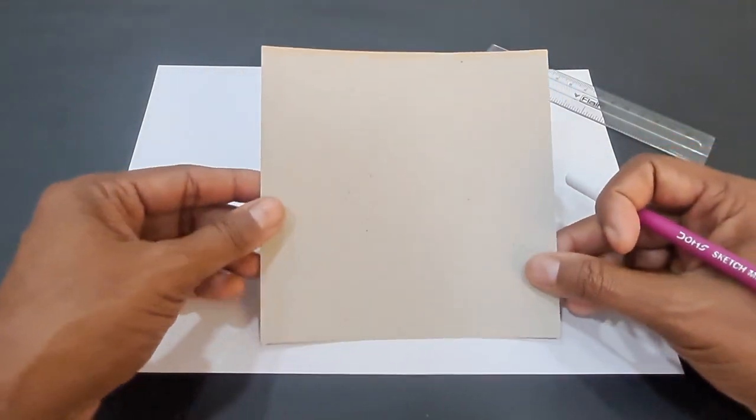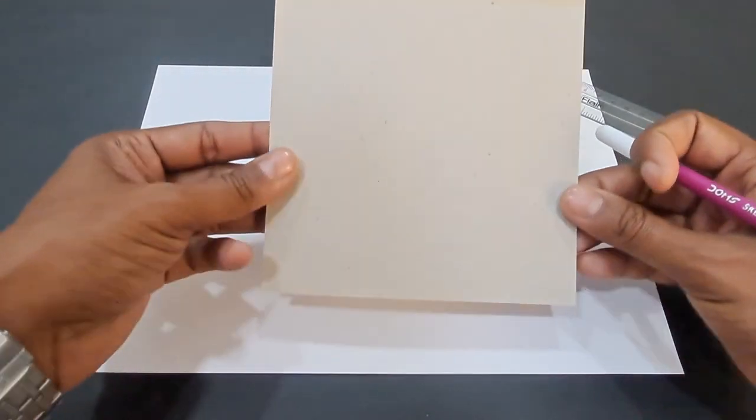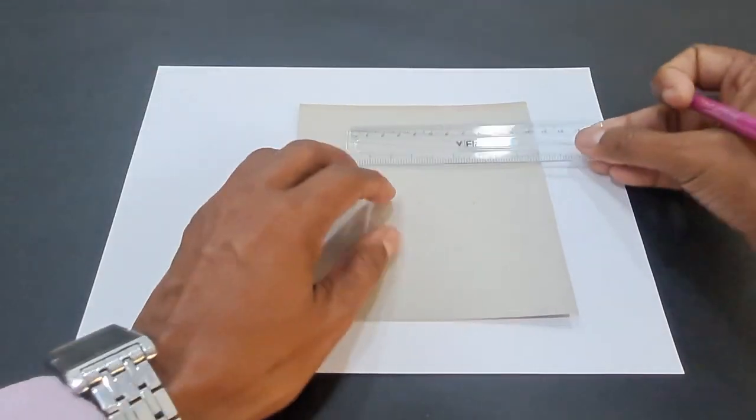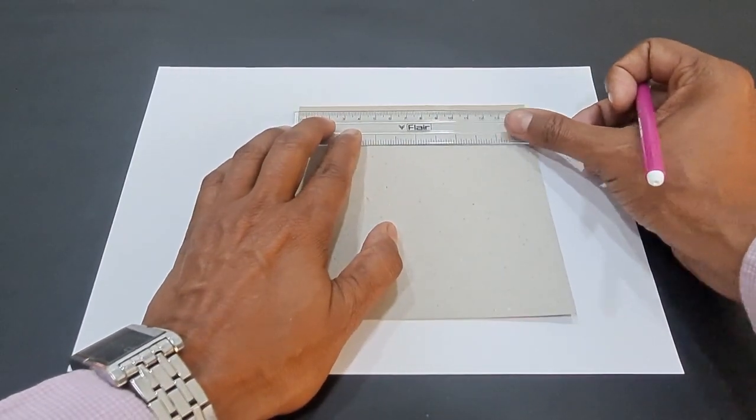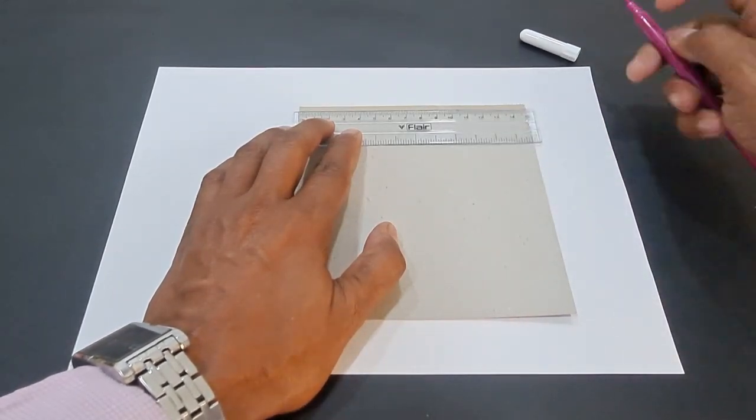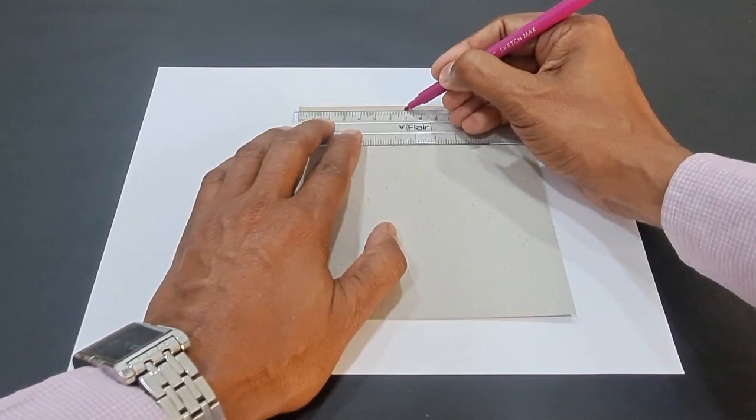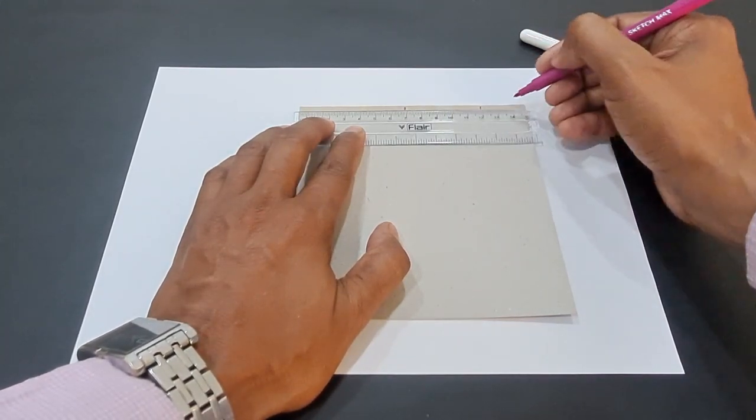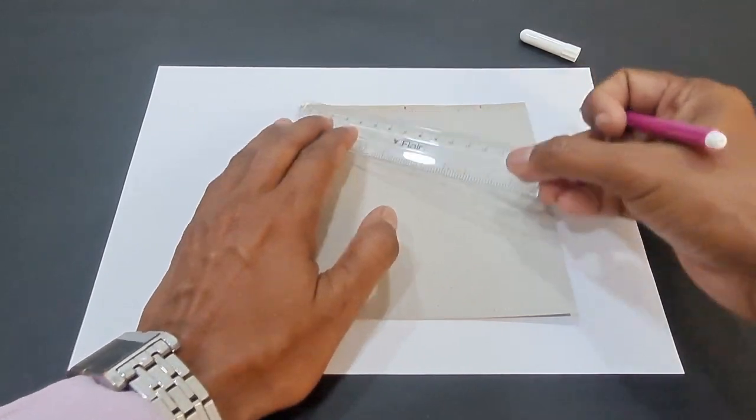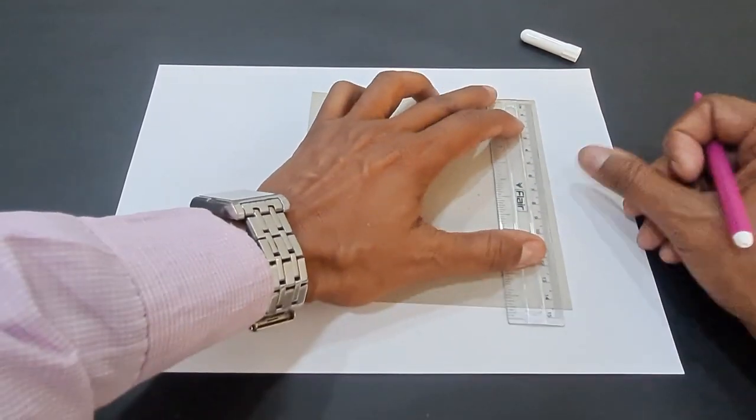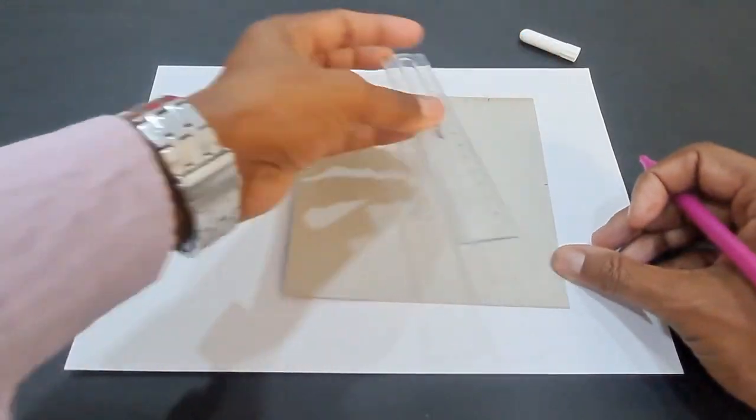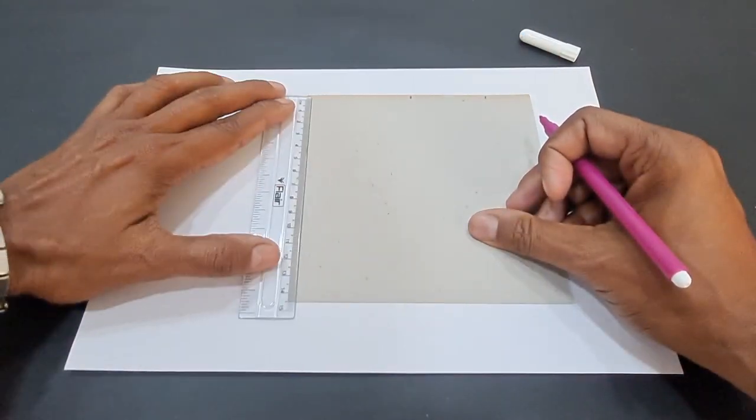For deriving the algebraic identity (a+b+c)², you need to take a square sheet of paper and then mark points on its sides. This is 15 centimeters, so you can mark 7 centimeter, then 5, and the rest will be 3 centimeters.